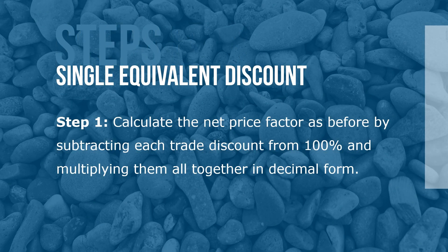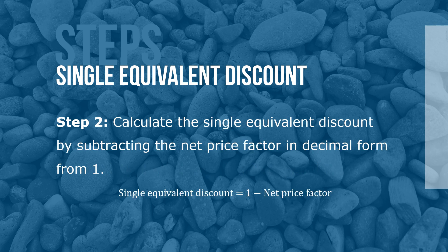Here are the steps to calculating a single equivalent discount. Step 1: Calculate the net price factor by subtracting each trade discount from 100% and multiplying them all together in decimal form. Step 2: Calculate the single equivalent discount by subtracting the net price factor in decimal form from 1. Single equivalent discount equals 1 minus the net price factor.